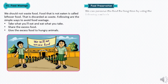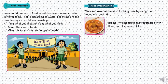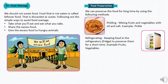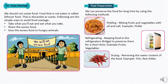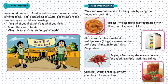Next is food preservation. We can preserve food for a long time using the following methods. First, pickling — mixing fruits and vegetables with oil and salt, for example pickles. Next, refrigerating — keeping food in the refrigerator to preserve them for a short time, for example fruits and vegetables. Next, drying — removing the water content from the food, for example fish and red chilies. Last, canning — storing food in airtight containers, for example jam.